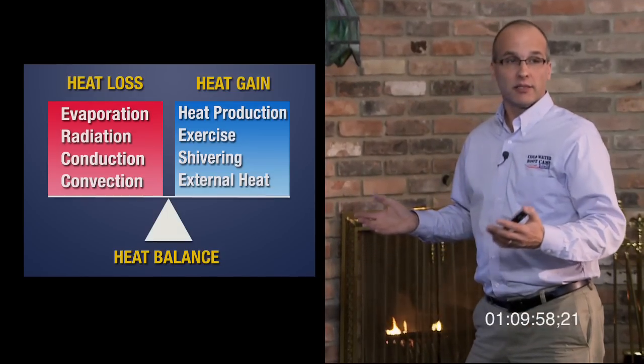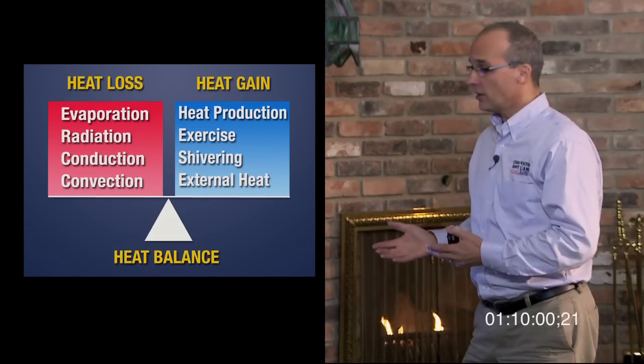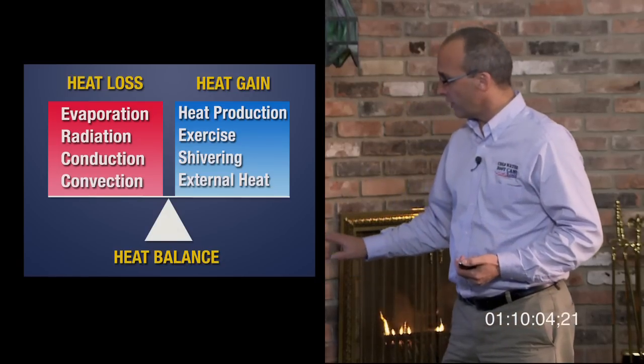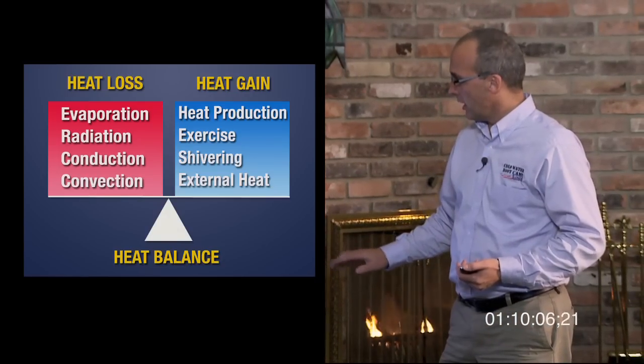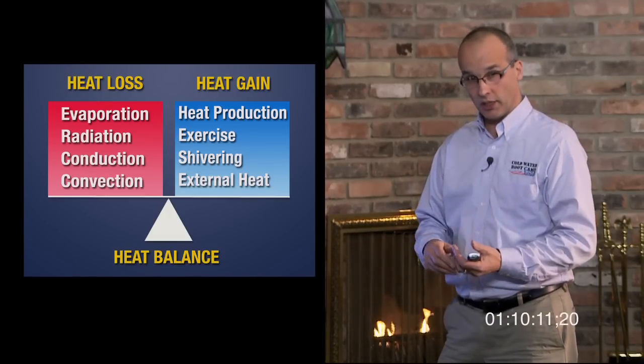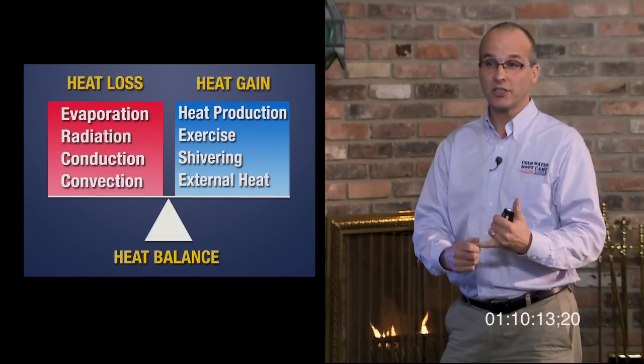Basically the body is trying to maintain homeostasis in temperature — in other words, keeping our body temperature at the same level throughout the day with some variation. Our core temperature is a balance between heat loss and heat gain. We lose heat through evaporation, radiation, conduction, and convection, and we balance that off with heat gain.